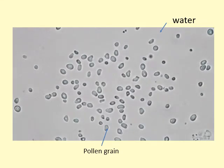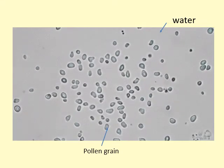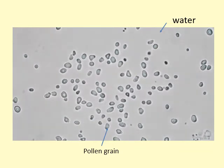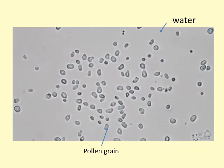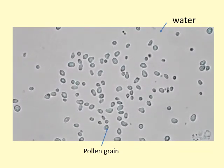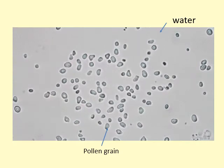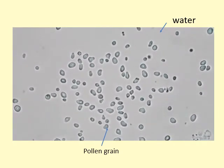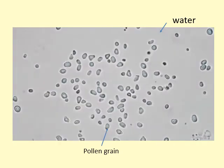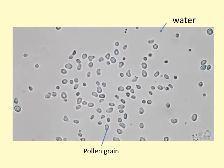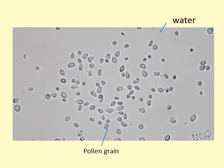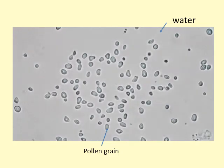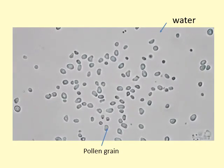When biologist Robert Brown looked down the microscope, he saw pollen grains jiggling around randomly and couldn't explain why. It wasn't until Einstein came along and suggested that it was because the water particles, which we can't see, were colliding randomly with the pollen grains, causing them to jiggle around like this.